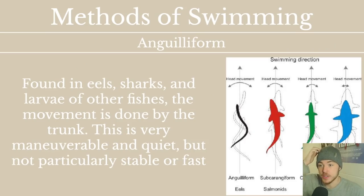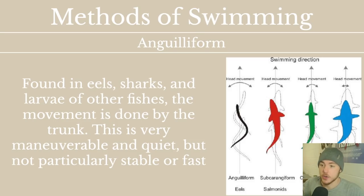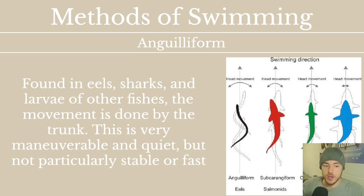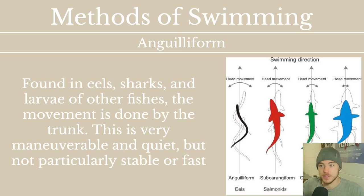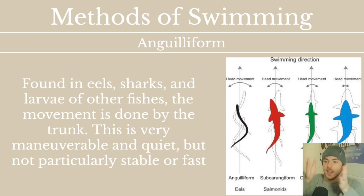The first swimming type is anguilliform — named after Anguilla, a genus of eels. This is found in eels, some sharks, and the larvae of other fishes. The movement is done by the trunk. It's very maneuverable and quiet, but it's not particularly stable and not particularly fast. Eels are really good at getting into little crevices and moving themselves around. They're very quiet, but they're not fast and they're not going in a perfectly straight line over long distances the way some schooling fish would.